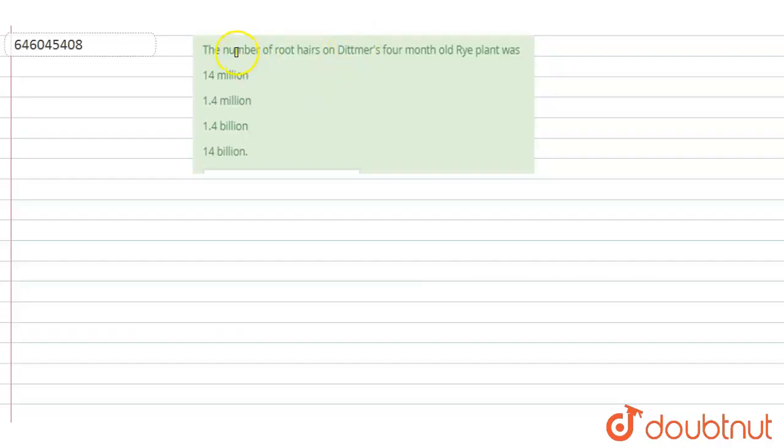The question is: number of root hairs on Ditmer's four-month-old rye plant. Options are 14 million, 1.4 million, 1.4 billion, 14 billion. So firstly we will understand root hairs, then we will see what is Ditmer's four-month-old rye plant.